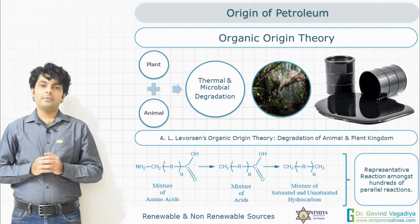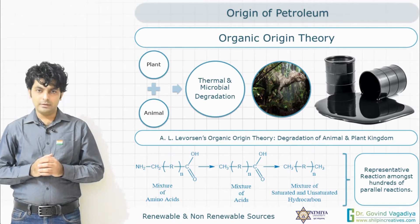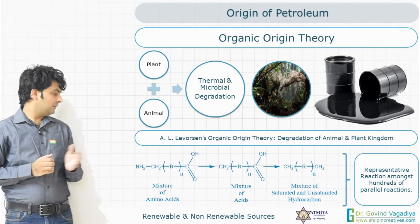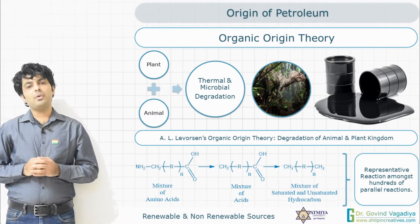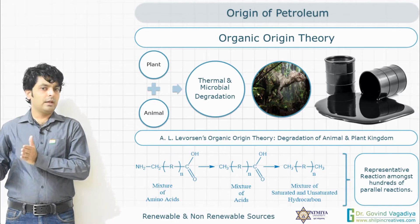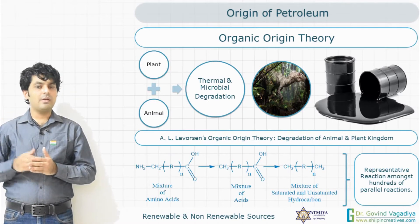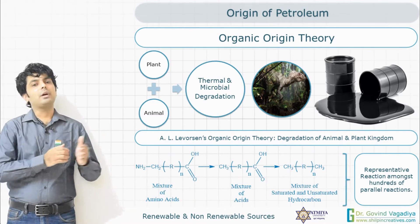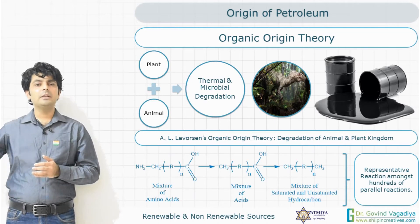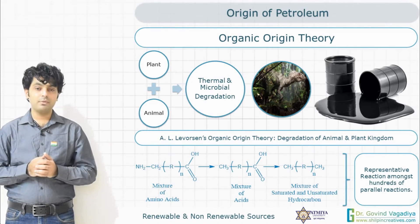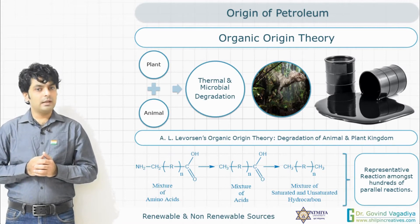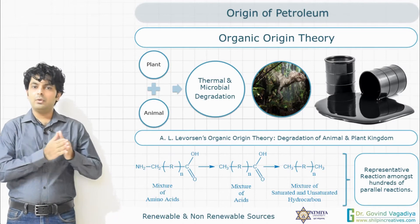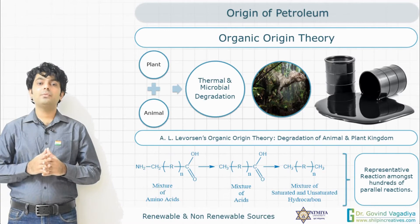The organic origin theory is currently accepted as the proven theory of petroleum origin. A representative equation shows that amino acids — present in animal life, plant life, and enzymes — were degraded into acids, then into carbohydrates. Amino acids, lipids, and other organic substances were all converted into today's petroleum via a long route.